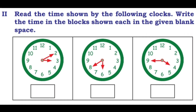Second main: Read the time shown by the following clocks. Write the time in the blocks shown in the given blank space. First one: small needle at 3, big needle at 2, so time is 3:10. Second one: small needle at 6, big needle at 8, so what is the time? 6:40.